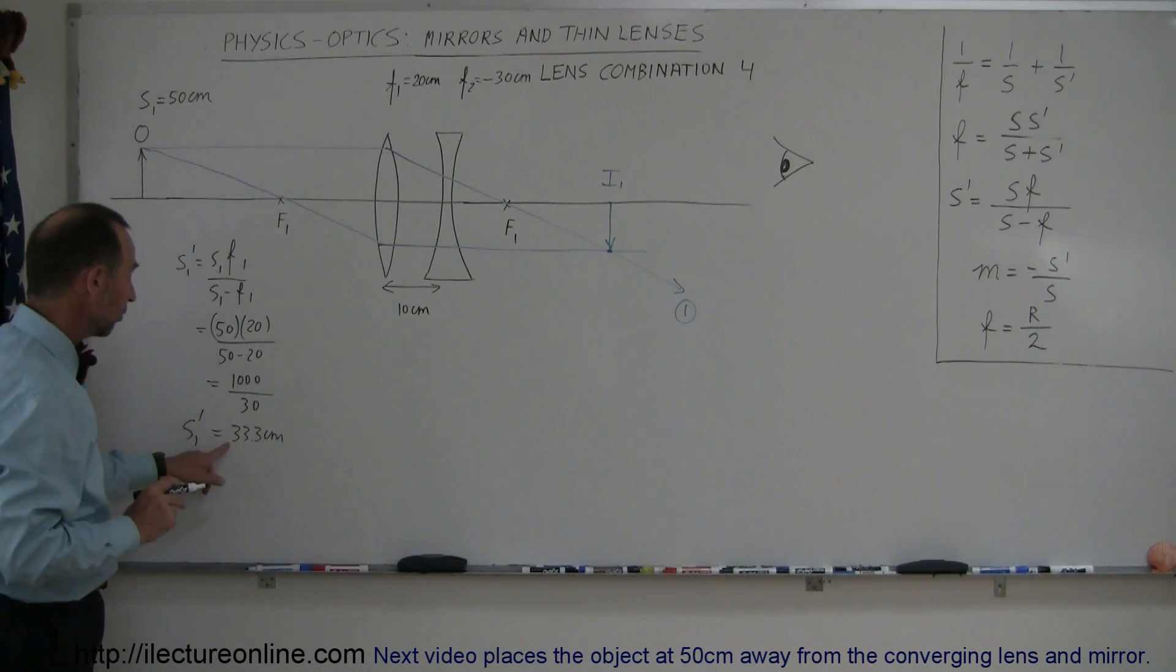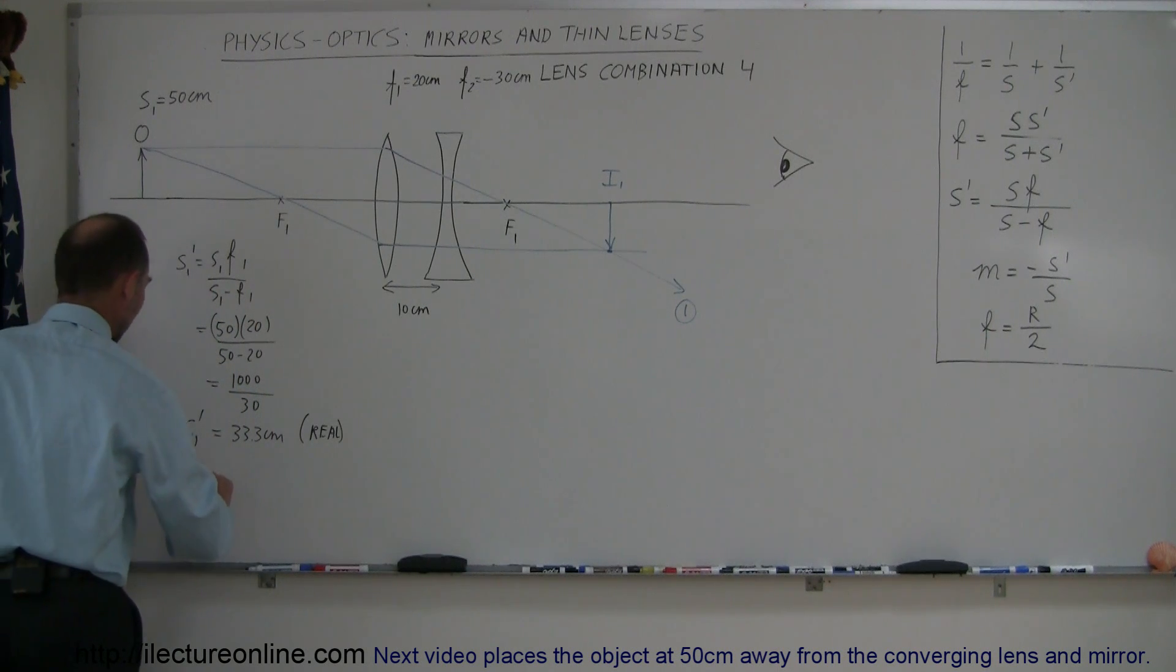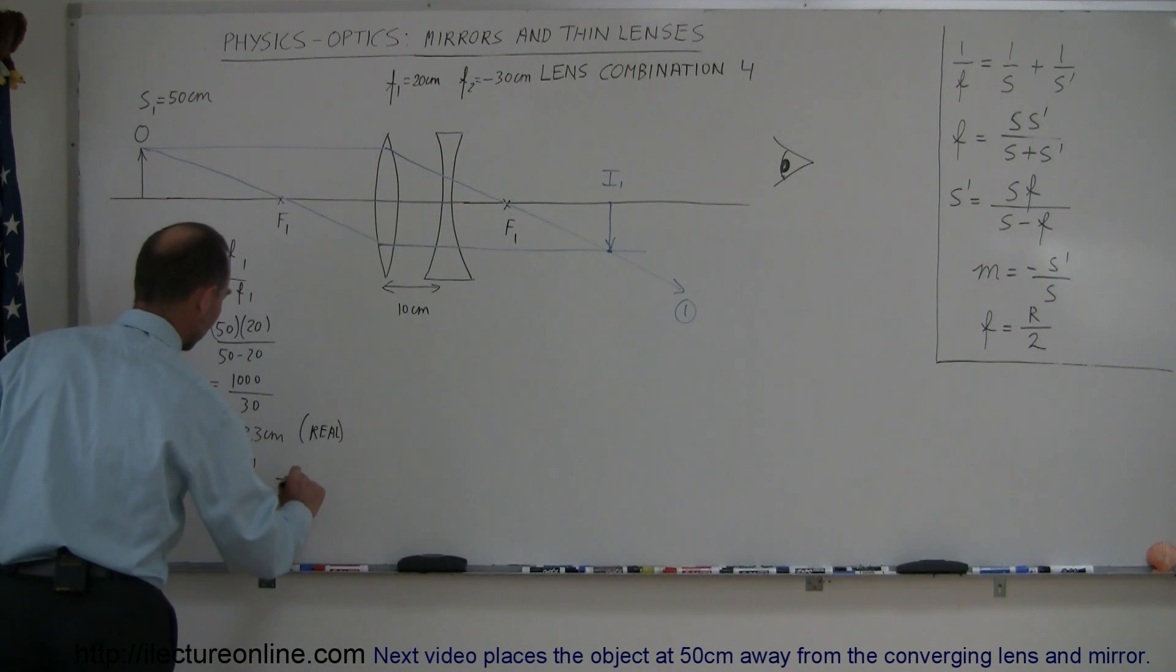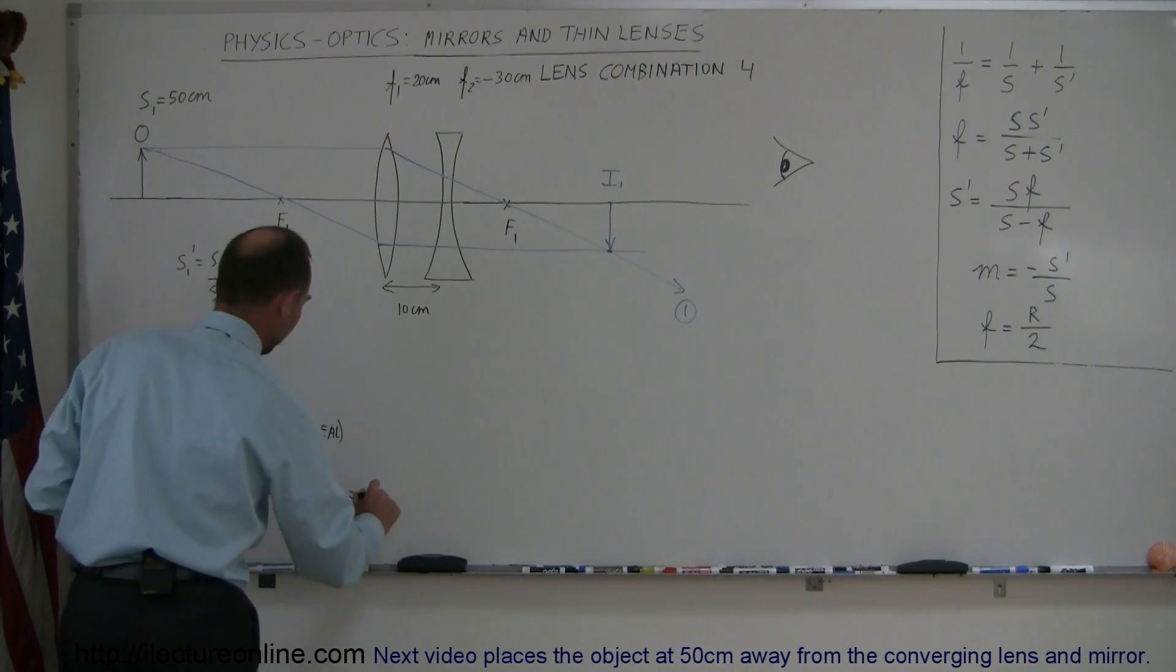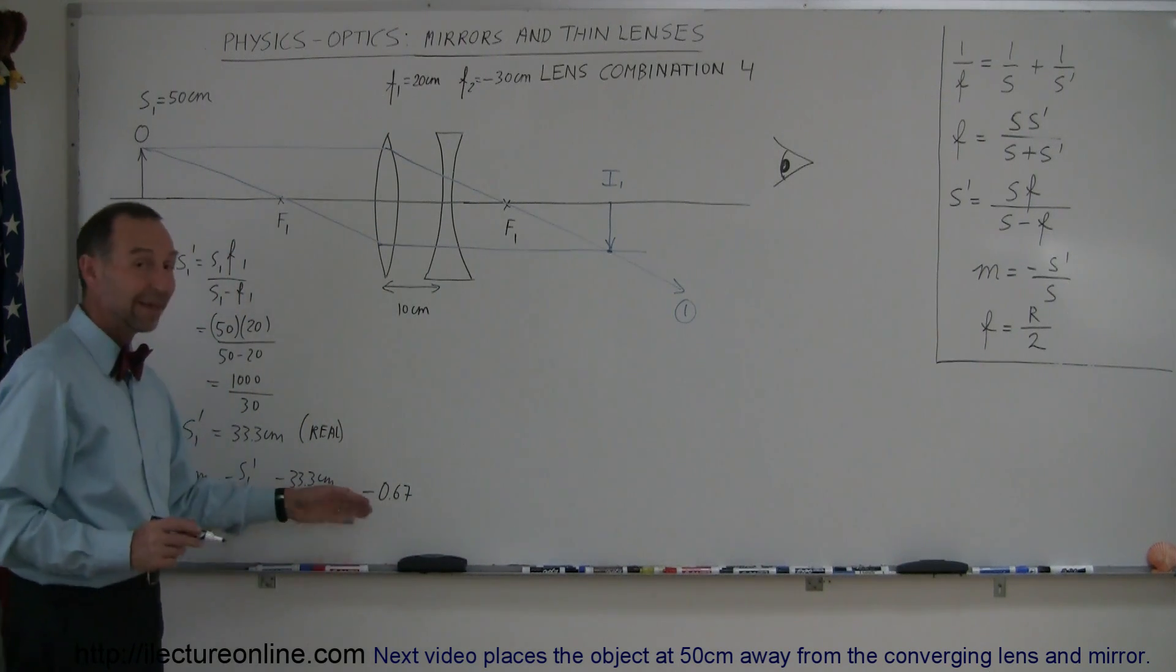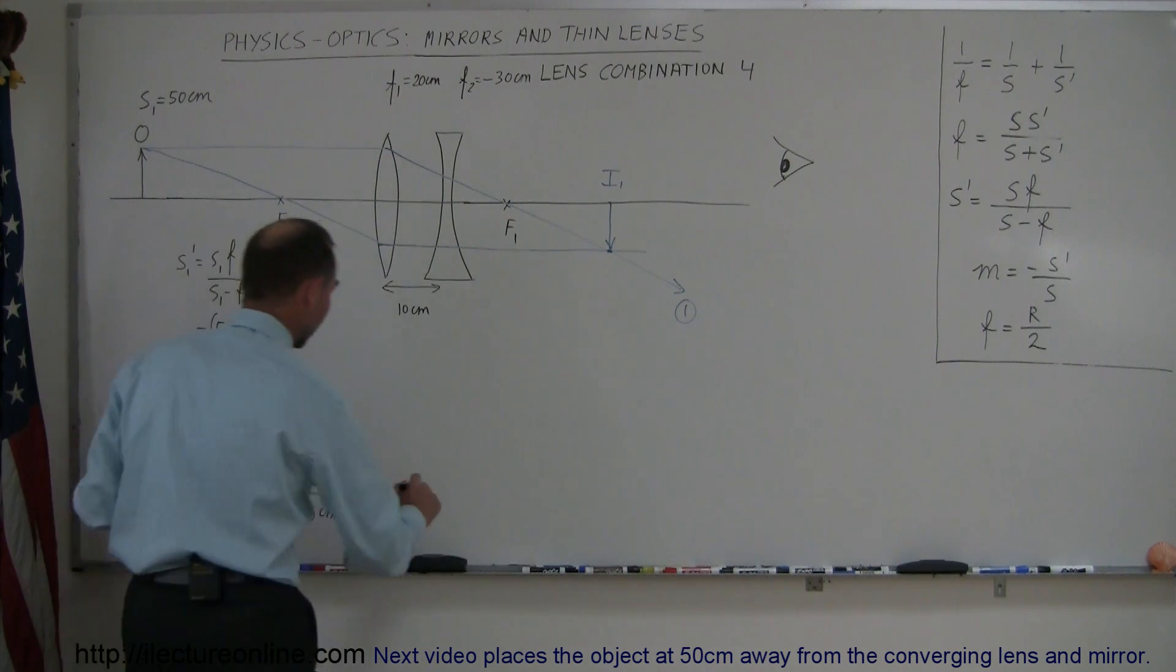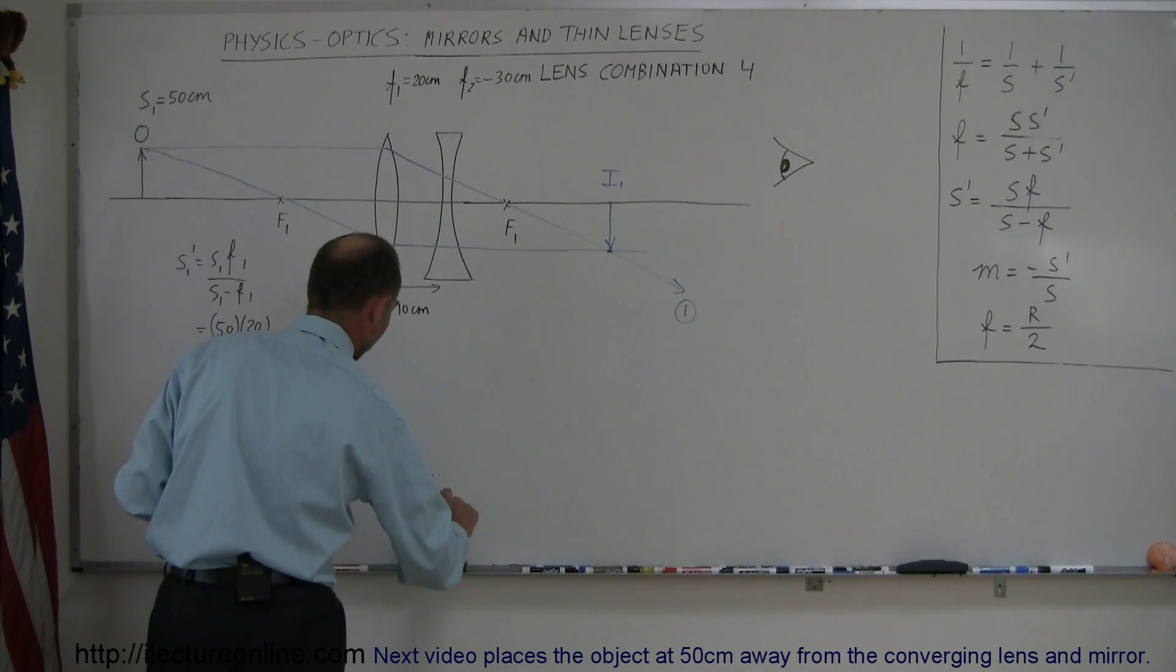Is it a real image? It certainly is because it's a positive image distance. To find the magnification M1, it equals minus S1' over S1, which is minus 33.3 centimeters divided by 50 centimeters, which equals minus 0.67. This means it's inverted because it's negative and it's about two-thirds the size of the original object.